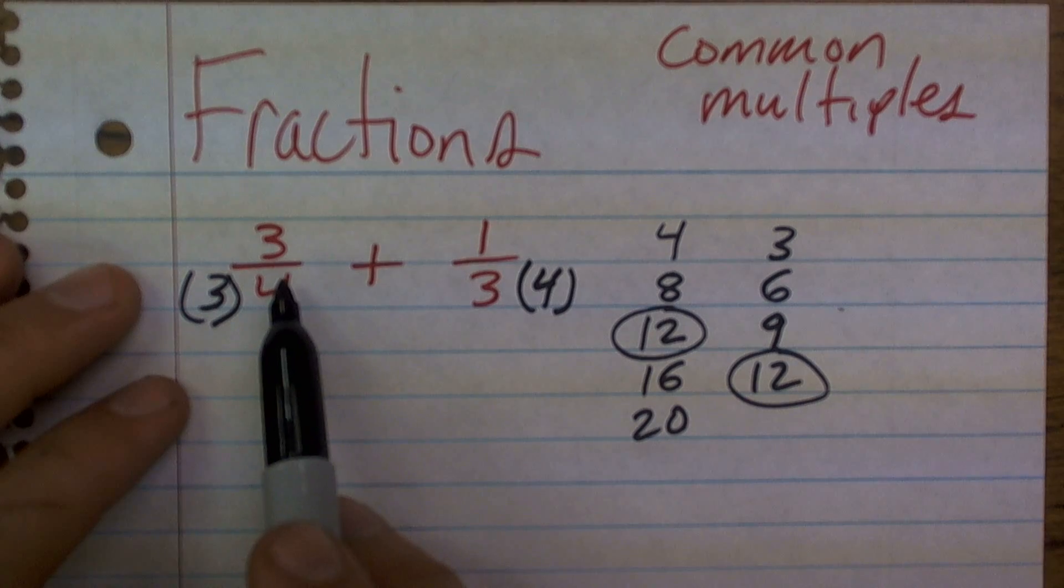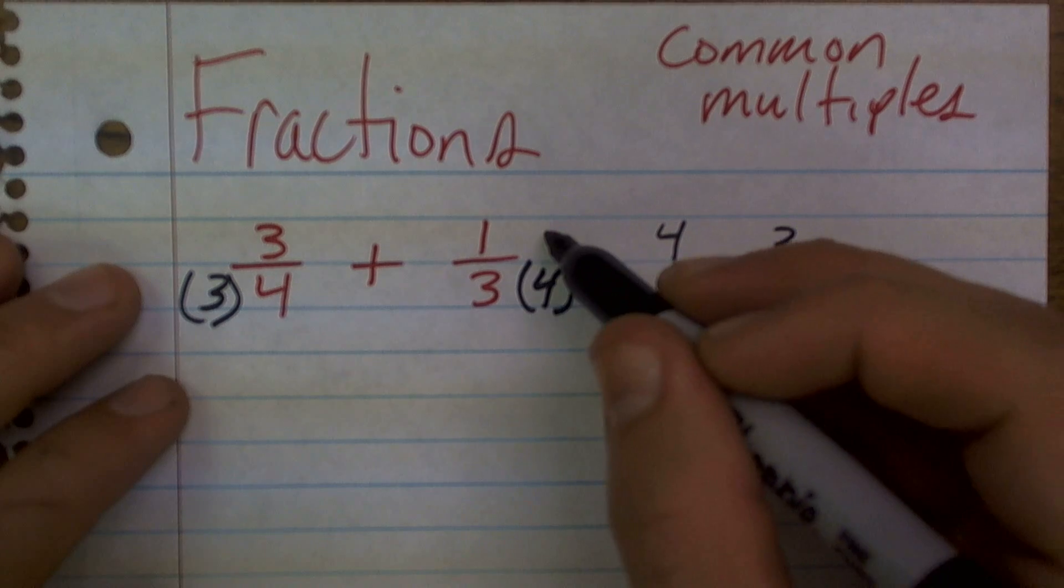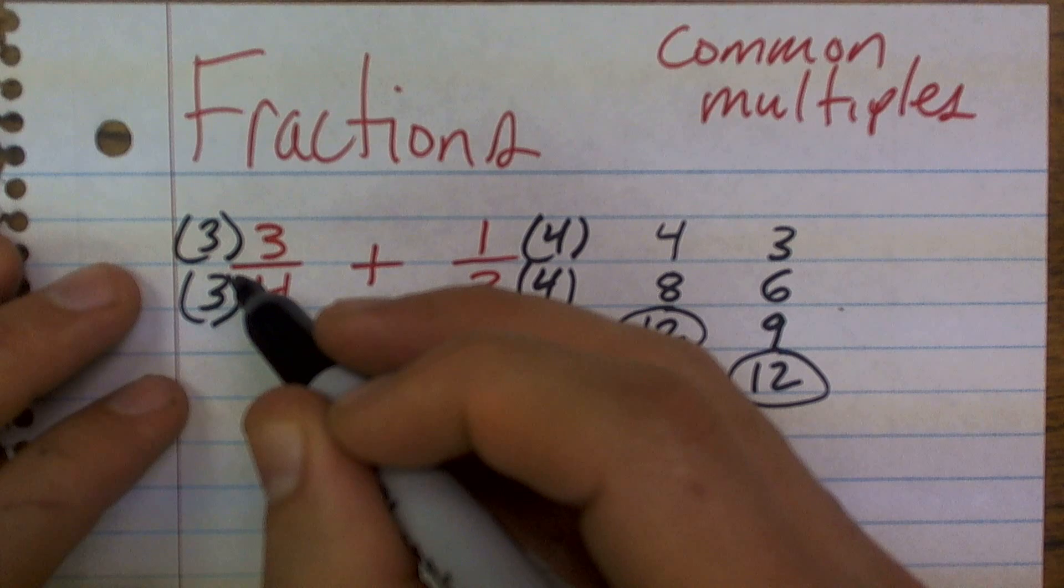Now remember, since we're dealing with fractions, we want to keep these equivalent fractions. So what I'm going to do is I need to make sure I multiply the numerator and the denominator by 3 and 4.